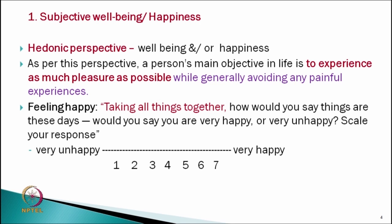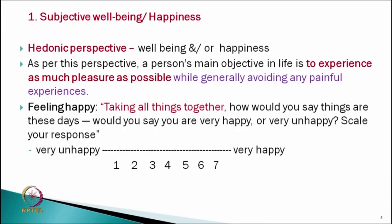As per this perspective, a person's main objective in life is to experience as much pleasure as possible while generally avoiding any painful experiences. If we are experiencing pleasure in our life and avoiding pain, then we have a higher happiness level. For assessing this type of happiness, we ask participants: taking all things together, how would you say things are these days? Would you say you are very happy or very unhappy? The scale runs from very unhappy to very happy. If someone scores 2 on this scale, their happiness level is low; if they score 6 or 7, we say this person is very happy.